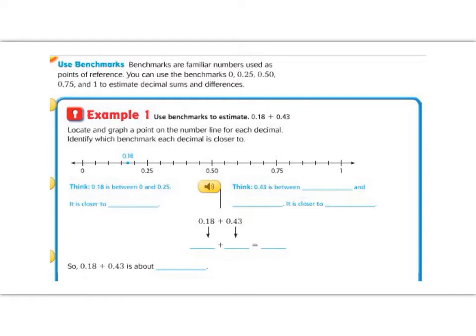In the first two examples that we did with rounding, we rounded to the nearest whole number and the nearest 10. We can also round decimals using what we call benchmarks. The benchmarks that we have are 0, 0.25 like a quarter or 25 cents, 0.50 like 50 cents or half, 0.75 like three quarters, or one. So if we look down here below, we are going to use benchmarks to estimate 0.18 plus 0.43.